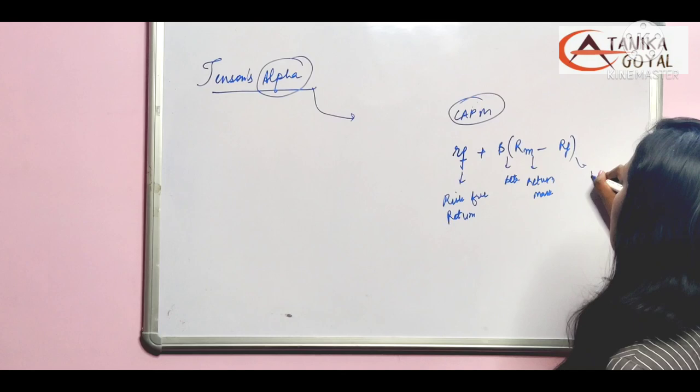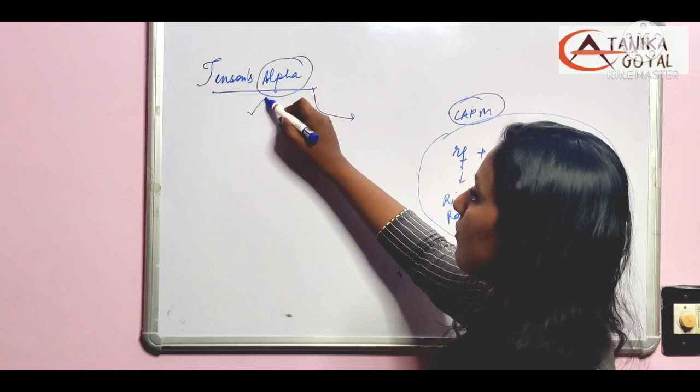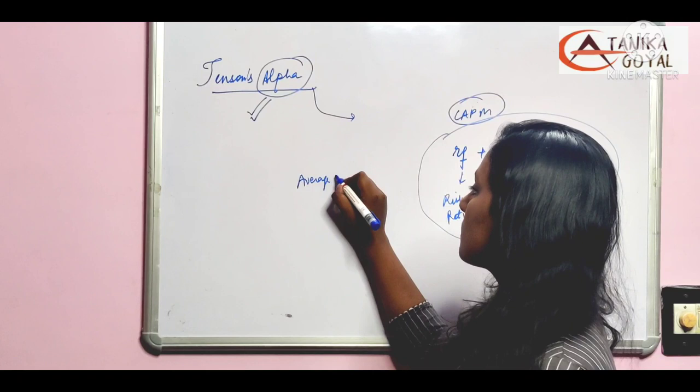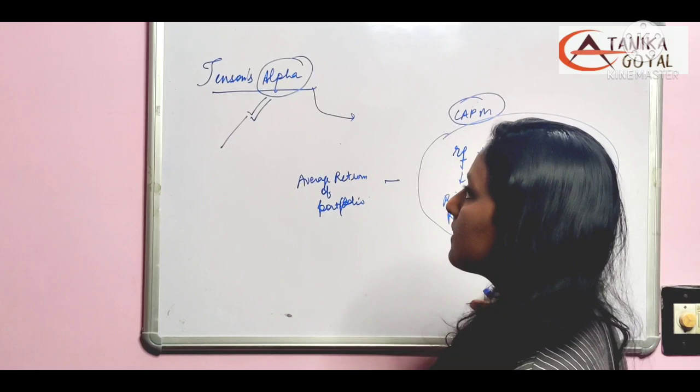Now, beyond this which is my return generated, we call Jensen's alpha. Beyond this, what will the return be? Average return of the portfolio and mutual fund minus CAPM. This is my Jensen's alpha. This is a simple formula. We have the CAPM formula. We know this. In this, we have to minus every return of portfolio. Then we have Jensen's alpha.